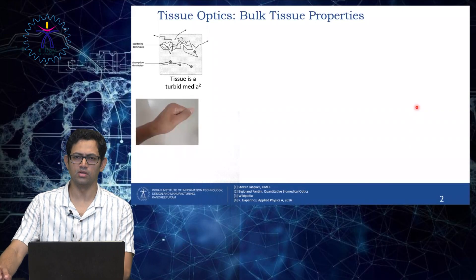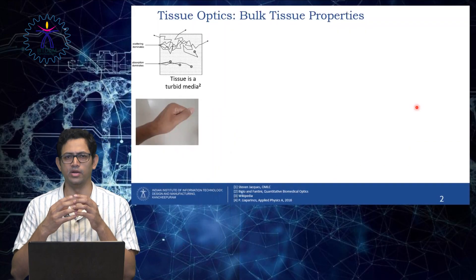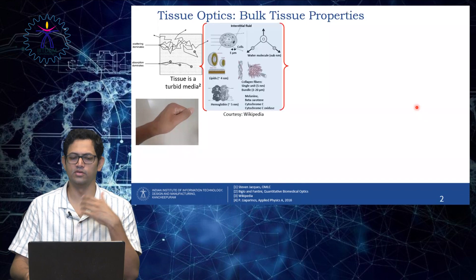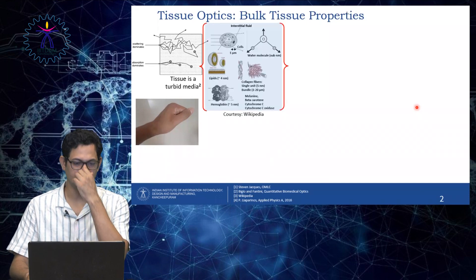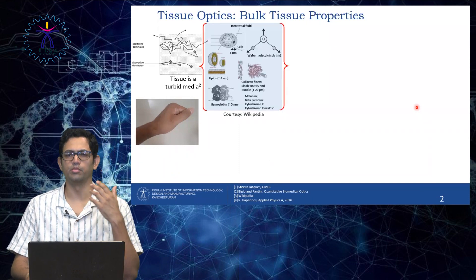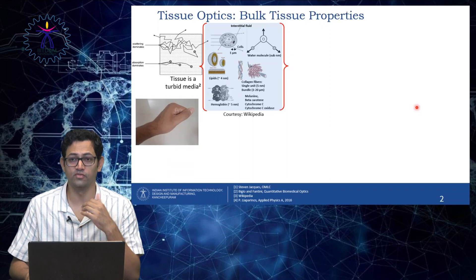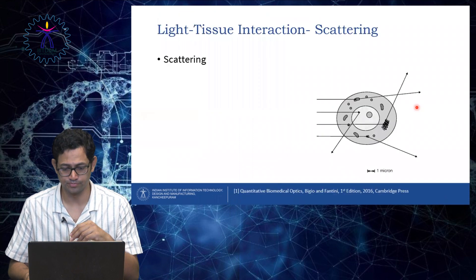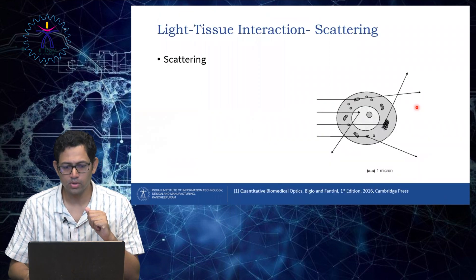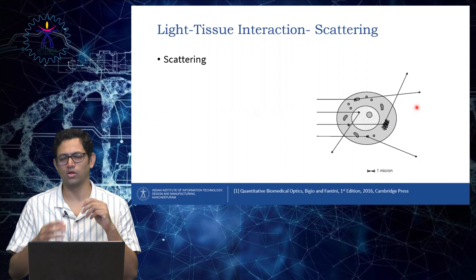As we talked about earlier, tissue is a turbid media — that is, it has a lot of different constituents. It has cells, water molecules, lipid, collagen, and other collagen features as well. Now let us talk about scattering.